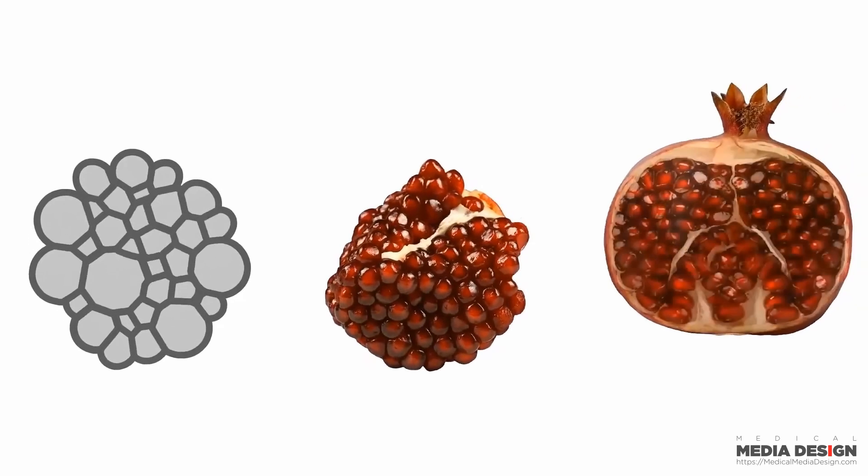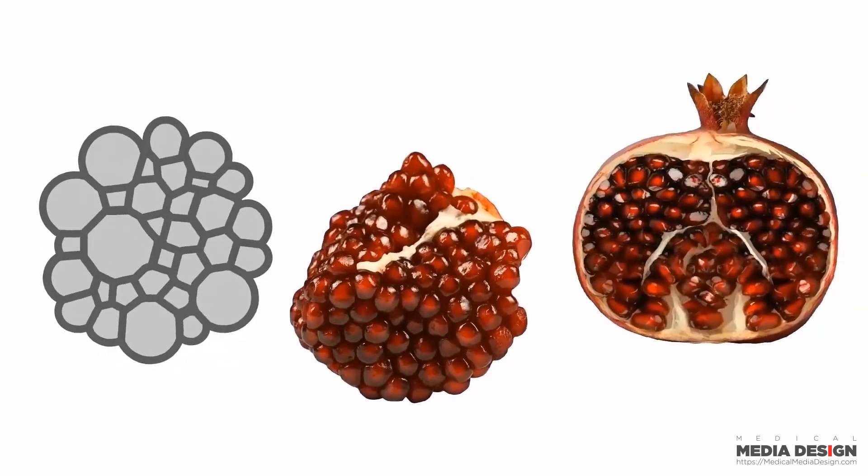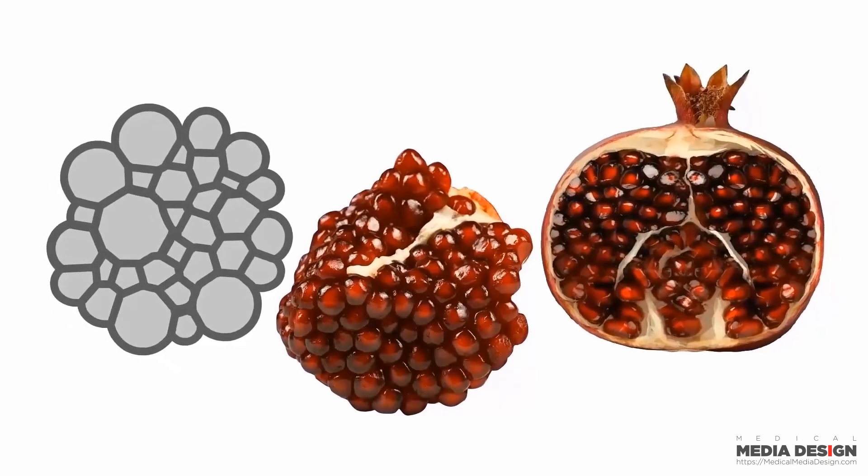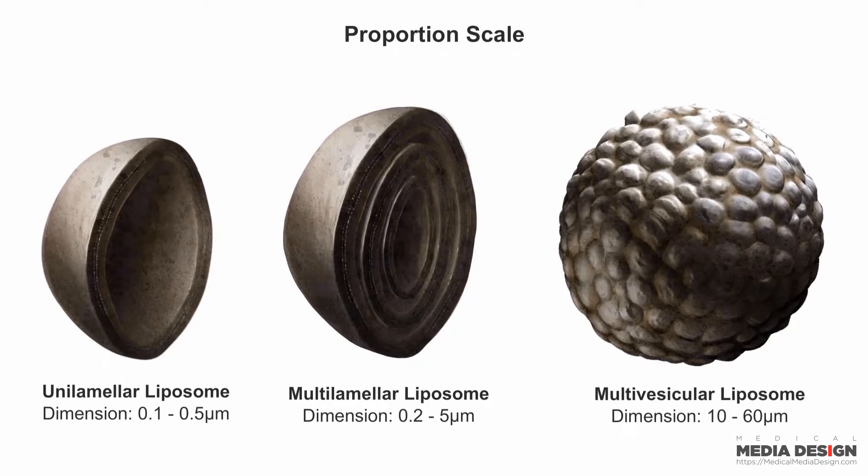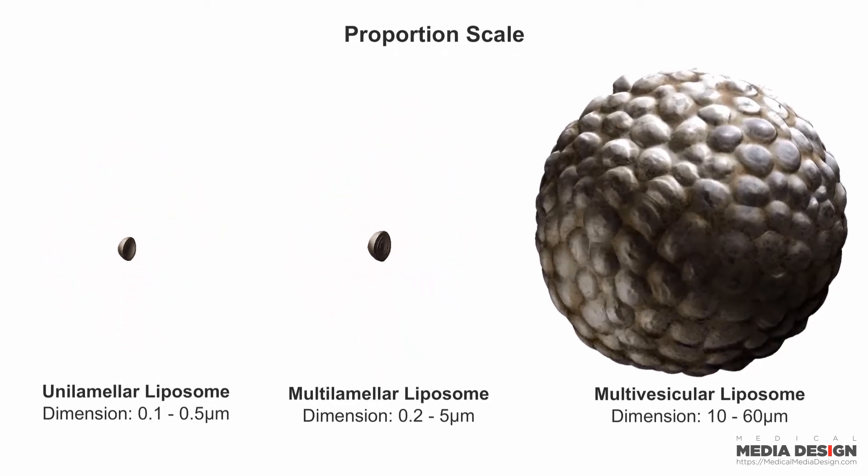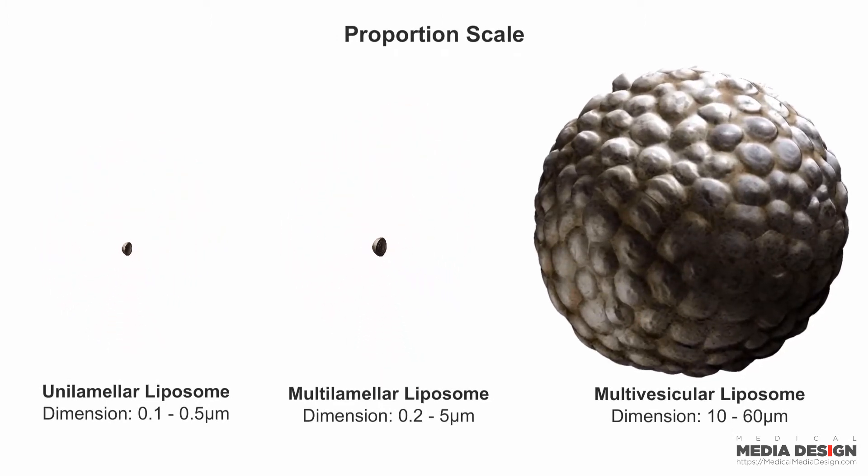The chambers vary in shape and size, similar to the seed arrangement inside of a pomegranate. DepoFoam particles generally range from approximately 10 to 60 microns in diameter, with a median diameter of 24 to 31 microns.